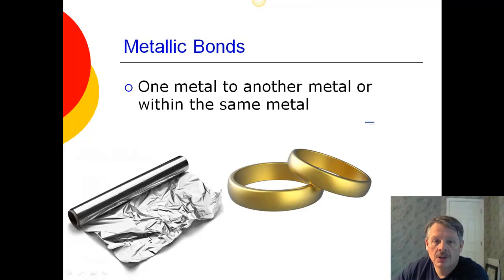For example, here you're seeing on the left, you're seeing aluminum foil. Aluminum foil is pure aluminum, so that is one metal bonded to itself, aluminum bonded to itself.